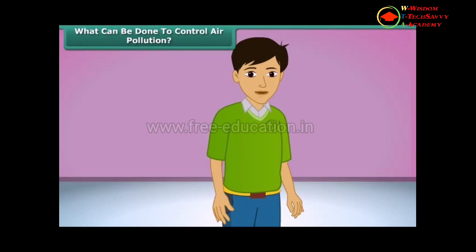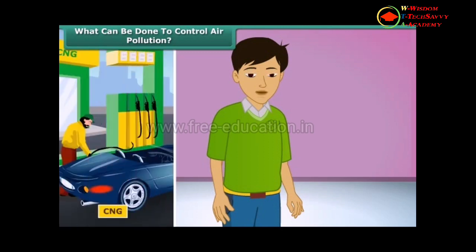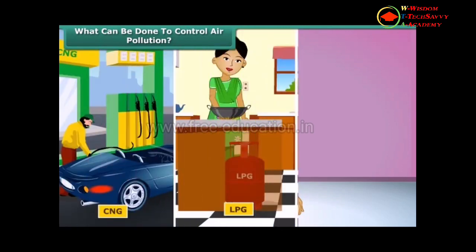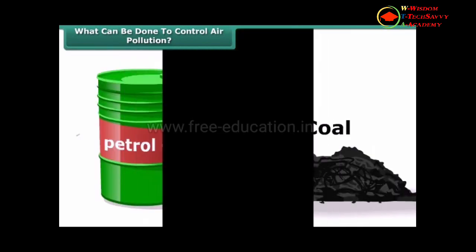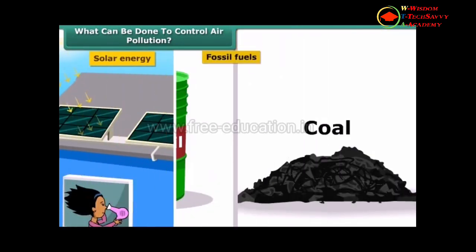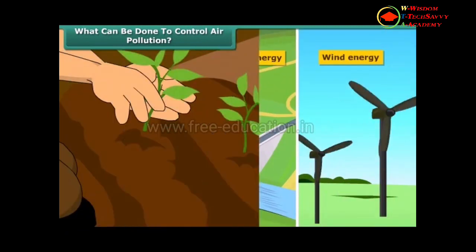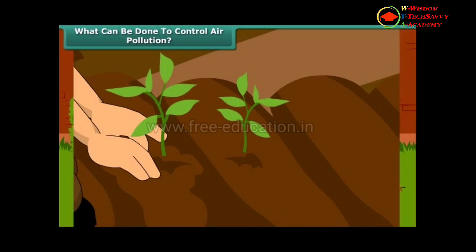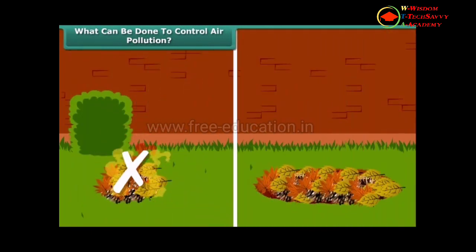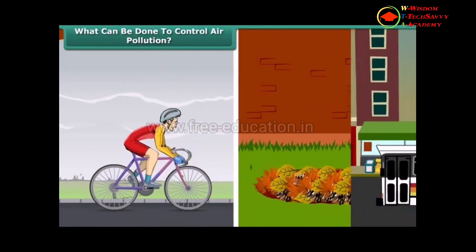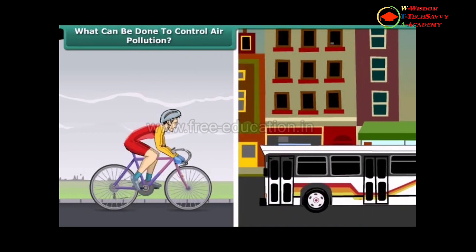What should we do to reduce air pollution? There are many things we can do. We can use clean fuels such as CNG, LPG, and unleaded petrol. Instead of fossil fuels, we can use solar energy, hydropower, and wind energy. We can also plant new trees. Rather than burning dry leaves, we can put them in a compost pit. We can walk more, switch over to bicycles for short distances, and use public transport.